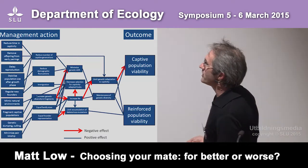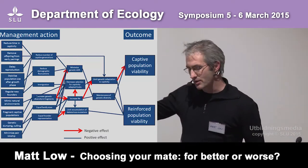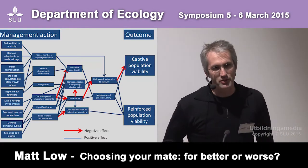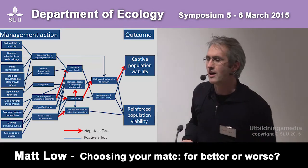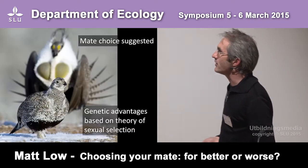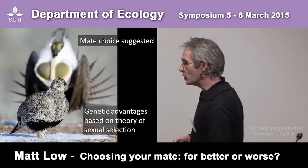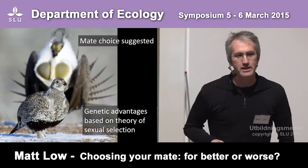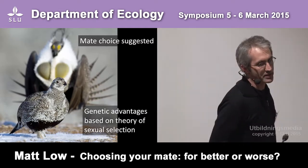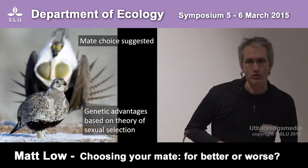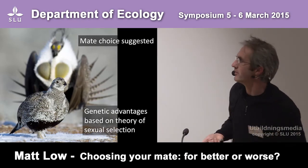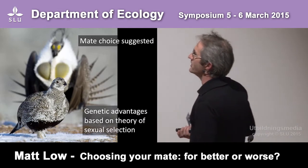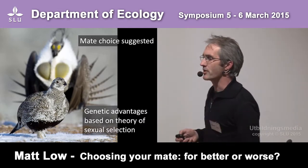And because we have this imperfect matching between what managers are doing and what's coming out the other end, there have been suggestions to improve this genetic management in captivity — that we actually move away in some cases from selective mating to bringing back mate choice, where females can actually choose what males they want to mate with in captivity. These ideas have been based on genetic advantages and the theory of sexual selection.